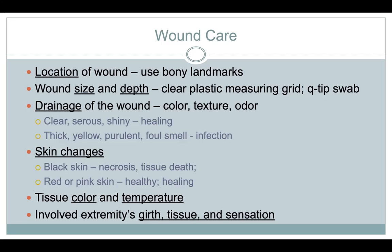We have to measure the size as well as the depth of the wound. Sometimes you need a Q-tip swab because a lot of wounds do what we call tunneling — where the wound actually tunnels down deeper into the skin, and you have to see how far the Q-tip can go before you hit resistance. Drainage color, texture, and odor matter: yellow, thick, or foul-smelling drainage indicates infection; clear and shiny means it's healing.